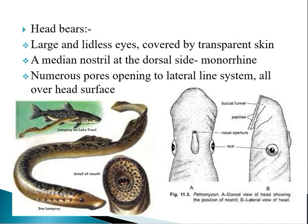The head region bears paired eyes which are large and lidless, covered by transparent skin with no eyelids. The eyes are paired and lateral; in a dorsal view both eyes can be seen on either side of the head.